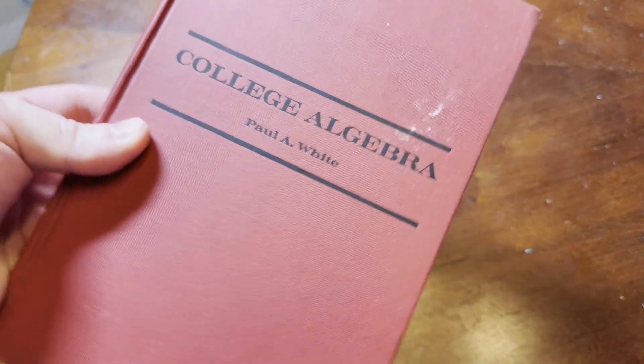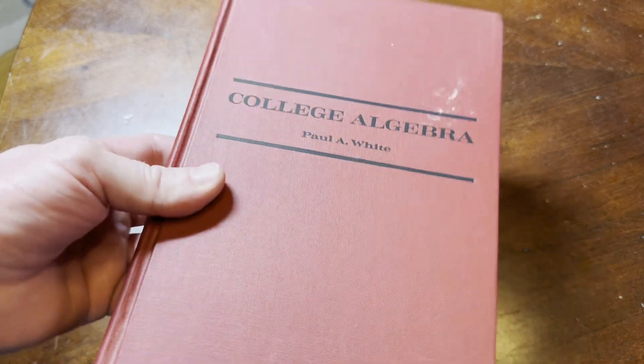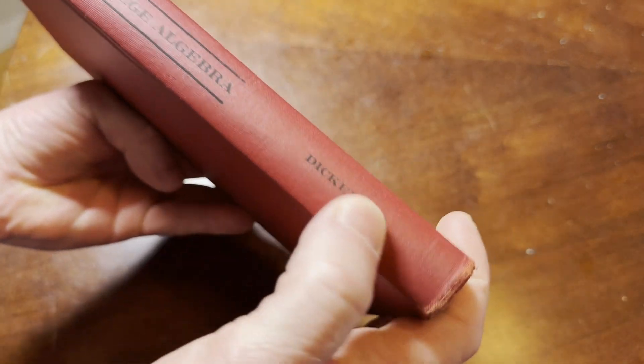Hi, in this video, I want to show you a college algebra book I have. It is called College Algebra and was written by Paul A. White. This is an older book published by Dickinson.